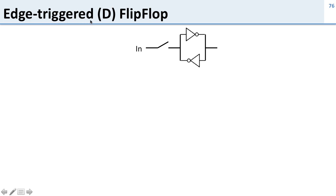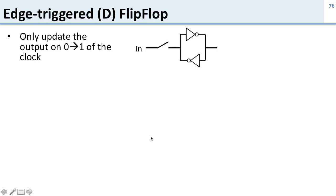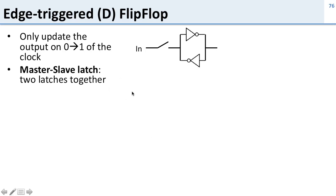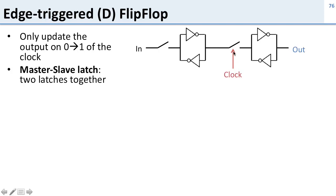We're going to fix that by creating something called an edge-triggered D flip-flop, which only changes its value on the clock edge — that is, when the clock changes from low to high. We only want to update when the clock goes from zero to one, and we'll do this by putting a master-slave latch together: two transparent latches combined. The first latch's switch is connected to the clock signal as before, but the second latch's switch is connected to the inverted clock signal. This means we can only write into the first latch when the clock is low, and only move data to the second latch when the clock is high.